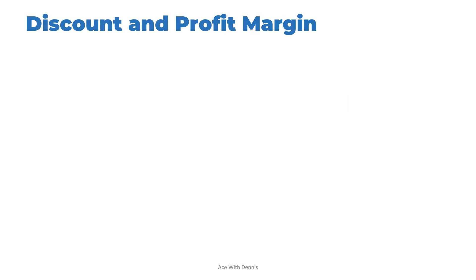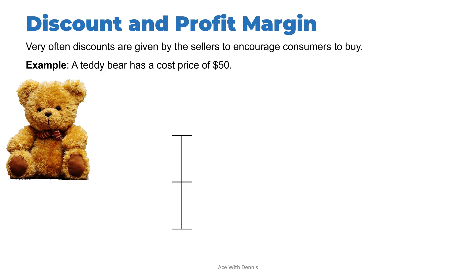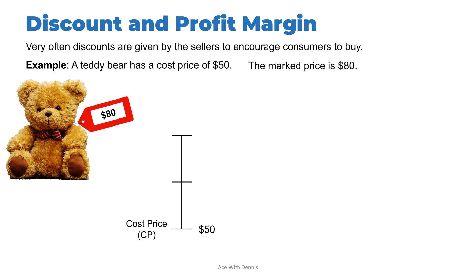In this section we talk about discount and profit margin. Discounts are often given by sellers to encourage consumers to buy. Profit margin is closely related to discount — we need to know our profit margin before giving a discount so we still make money. For example, a teddy bear has a cost price of $50 and a marked price of $80 — the marked price is the price shown on the product.